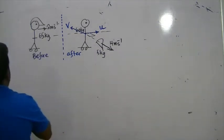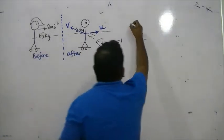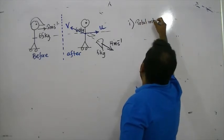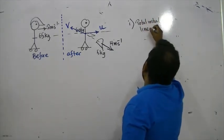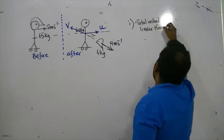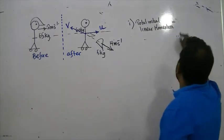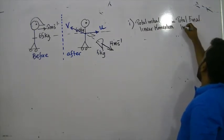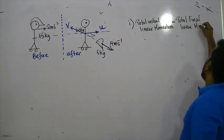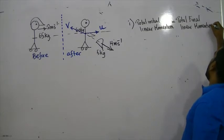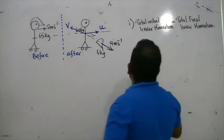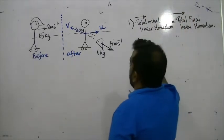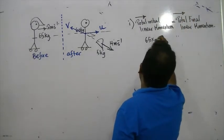Let's apply conservation of momentum. Total initial linear momentum equals total final linear momentum. In the forward direction, the initial linear momentum is 65 times 2.